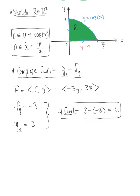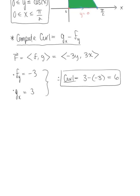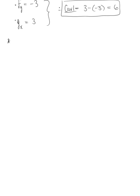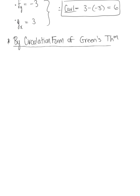We have everything we need to compute the circulation around this boundary using Green's theorem. So by the circulation form of Green's theorem, we have the following. We have the double integral over this region R of the curl, which we just computed, dA.